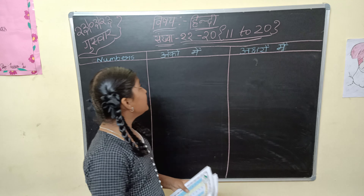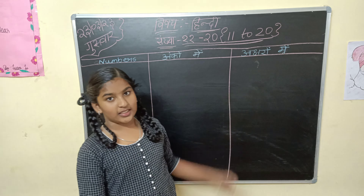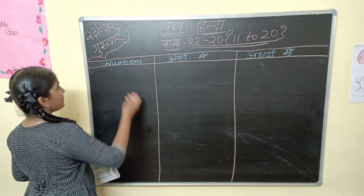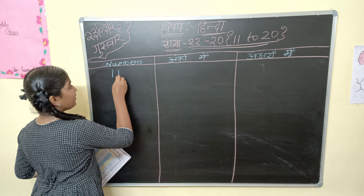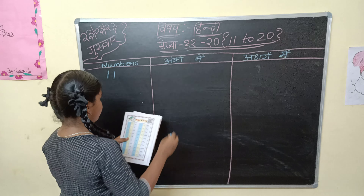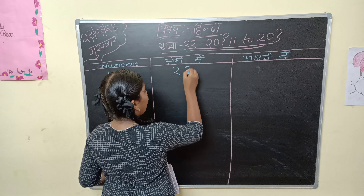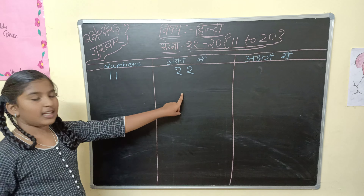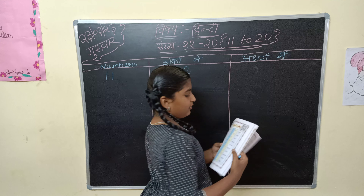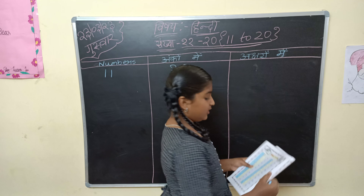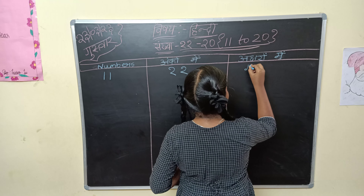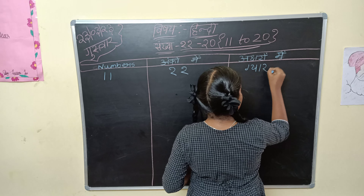Today we are going to learn the numbers 11 to 20 in Hindi. The numbers we will write as it is: 11. In ankho me — the digits — I taught you. Ankho me means 1 and 1, so it is 11. Then aksharomi, which is what we write in words, it is gyara. Gyara.